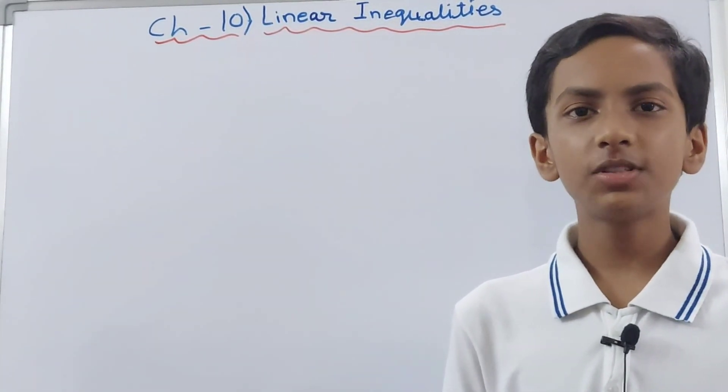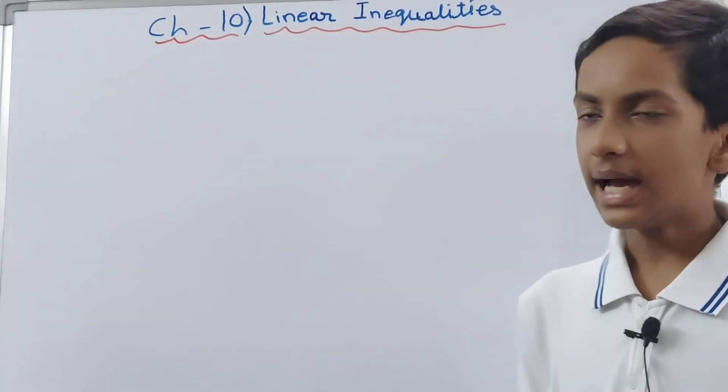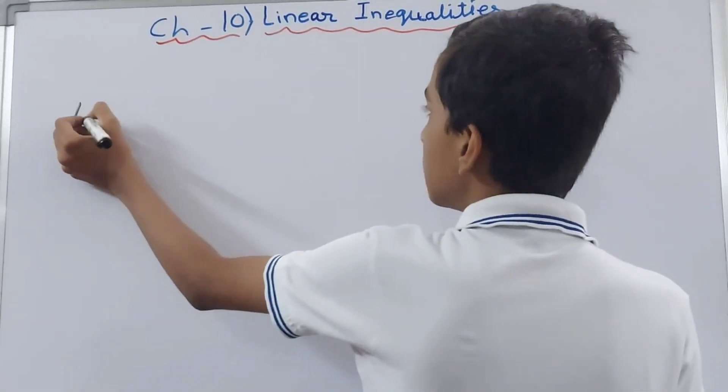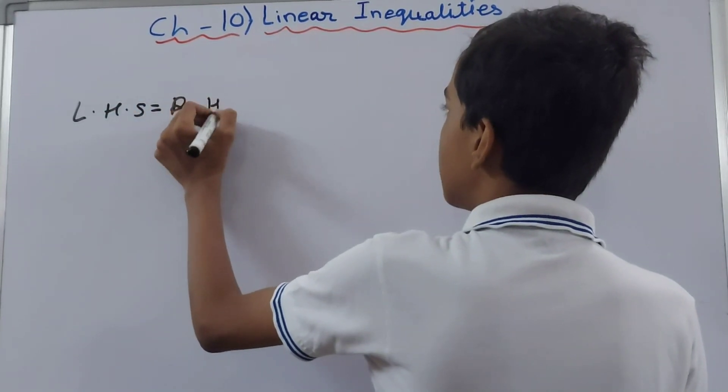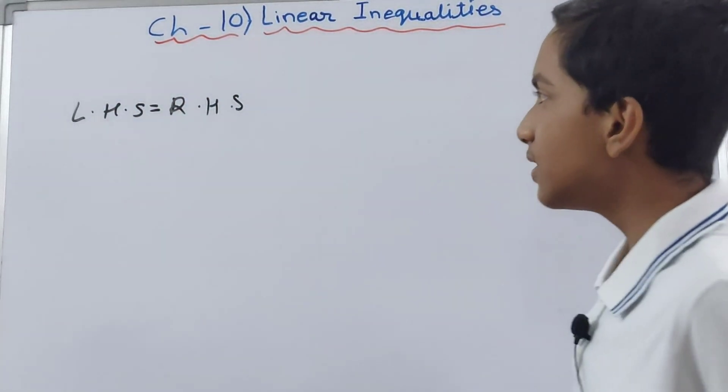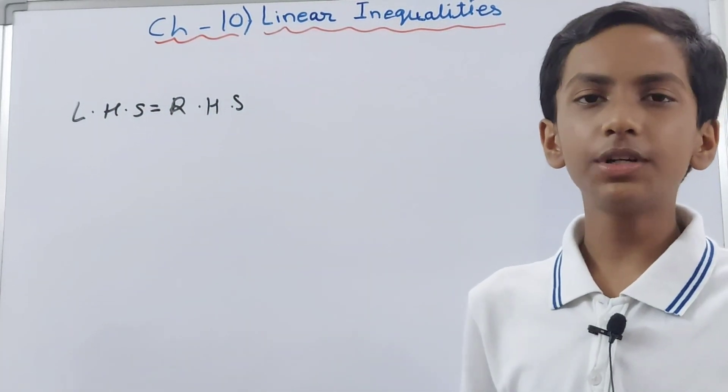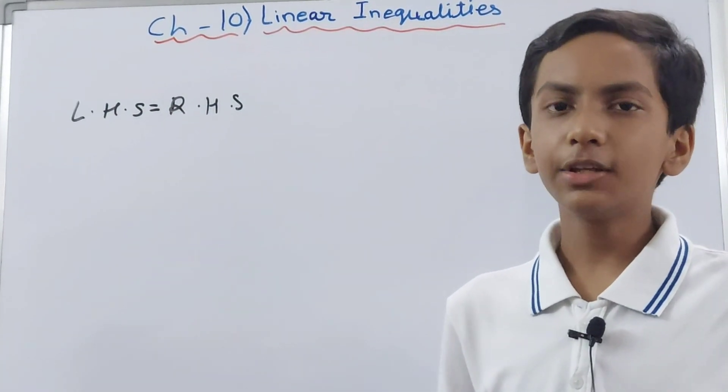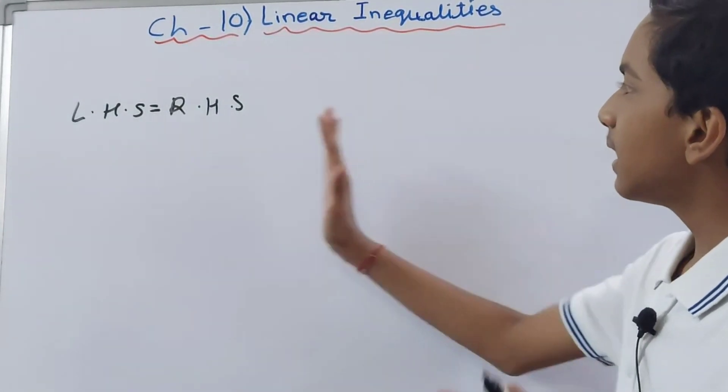As we have solved some linear equations in previous classes, we know that in a linear equation the LHS is always equal to the RHS. Both sides are equal. But in inequalities, the total opposite of this happens.